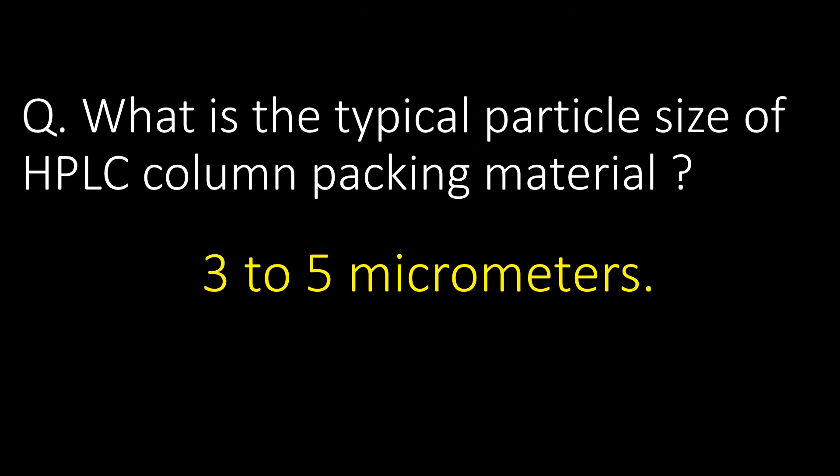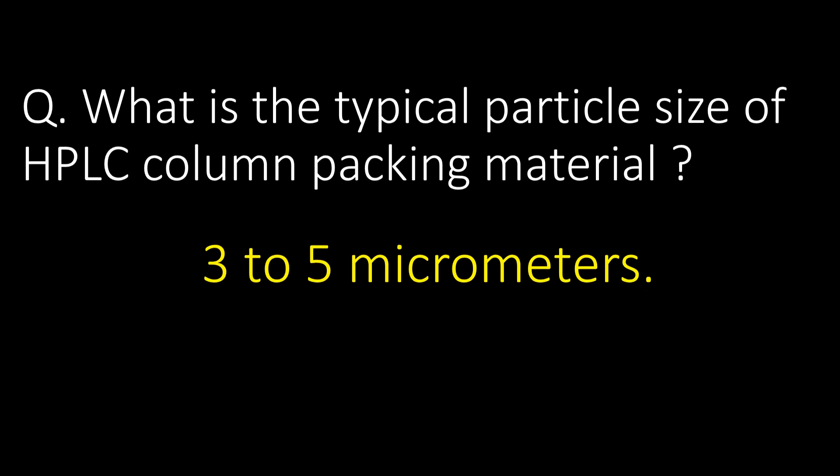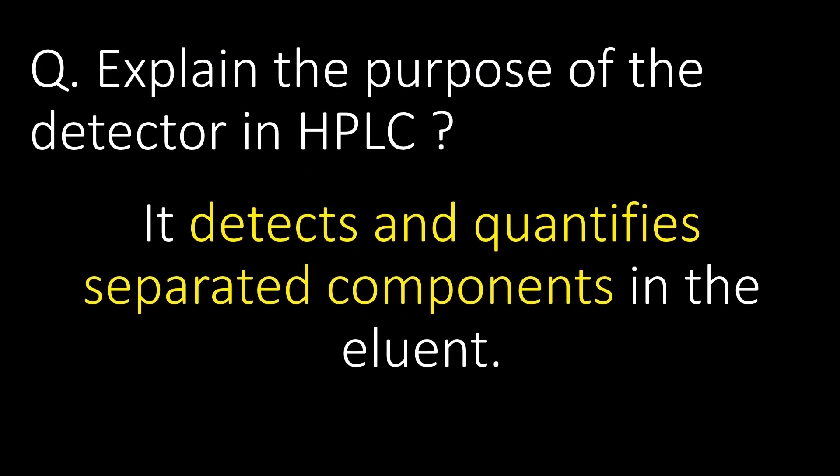What is the typical particle size of HPLC column packing material? The answer is 3 to 5 micrometers. The purpose of the detector in HPLC is to detect and quantify separated components in the eluent.